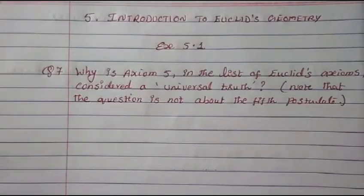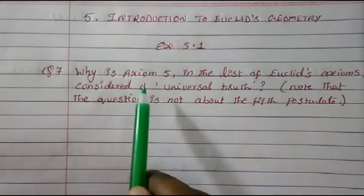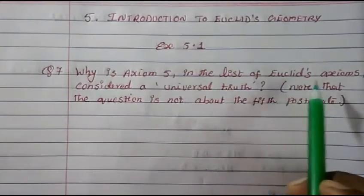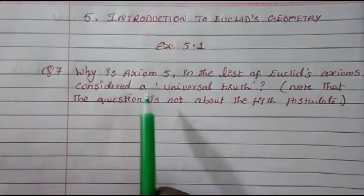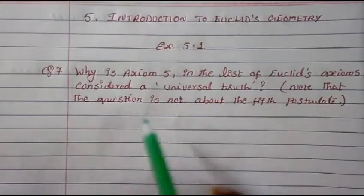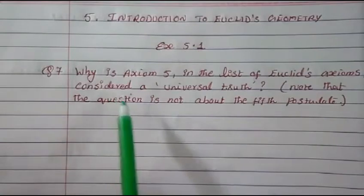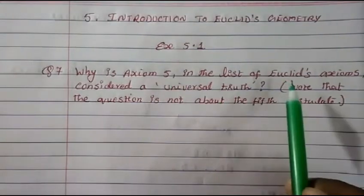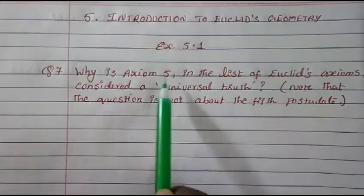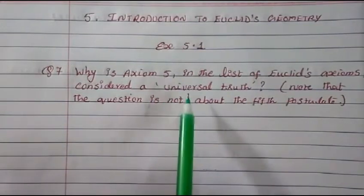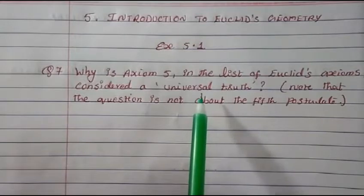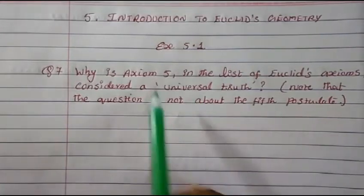Hi everyone, today we are going to study from Class 9th, Chapter 5: Introduction to Euclid's Geometry, Exercise 5.1, Question 7 — why is Axiom 5 in the list of Euclid's axioms considered a universal truth? Note that the question is not about the fifth postulate, but about the fifth axiom.